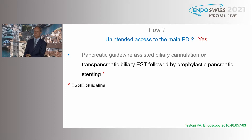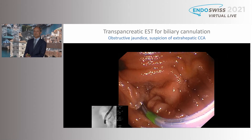Now, how I do it: I follow the ESGE guidelines. In case I have unintended access to the main pancreatic duct, we have the option of pancreatic guidewire-assisted biliary cannulation — the double guidewire technique — but recent data show this is associated with an increased risk of post-ERCP pancreatitis. Therefore, I prefer the trans-pancreatic biliary EST followed by prophylactic pancreatic stenting.